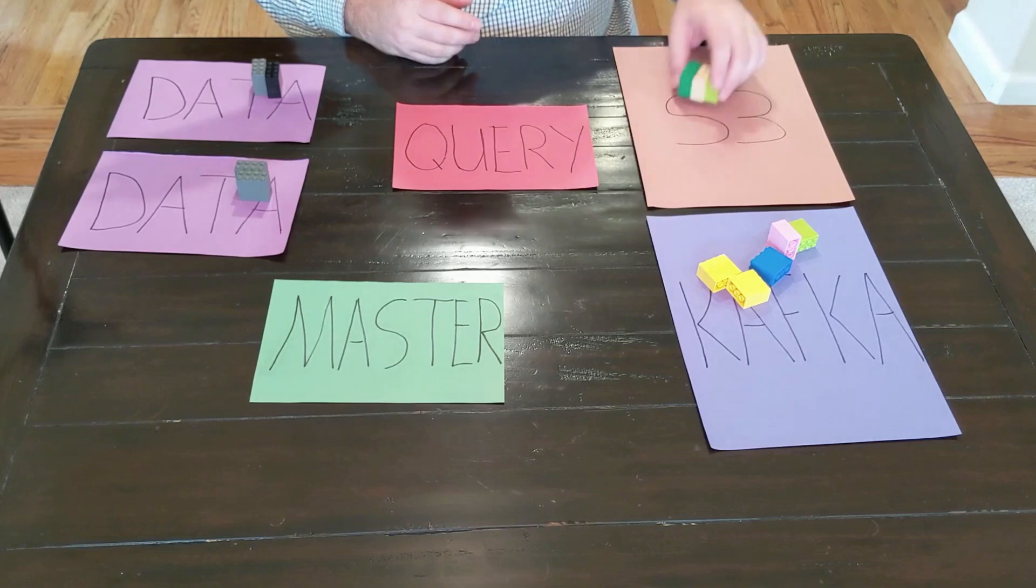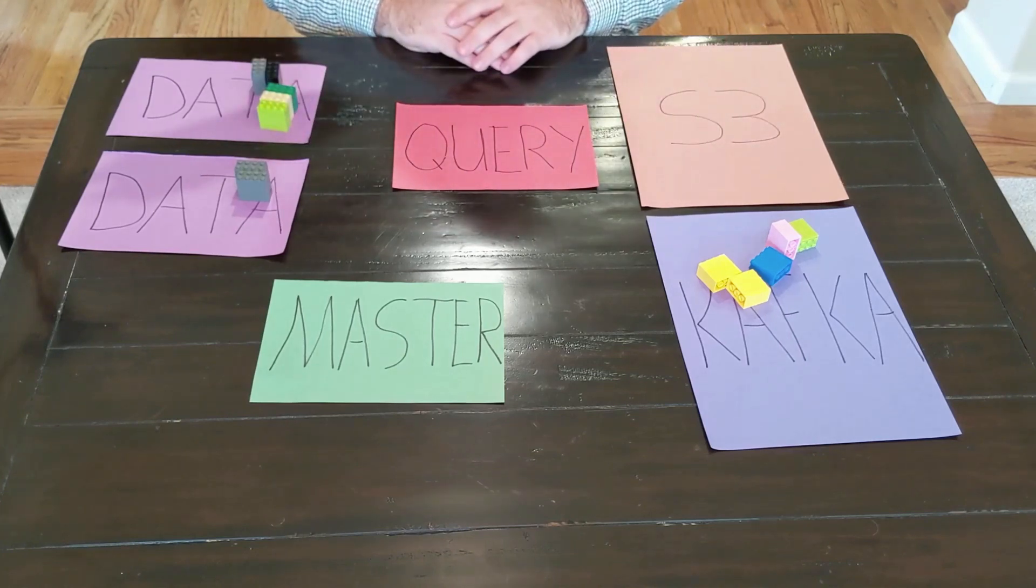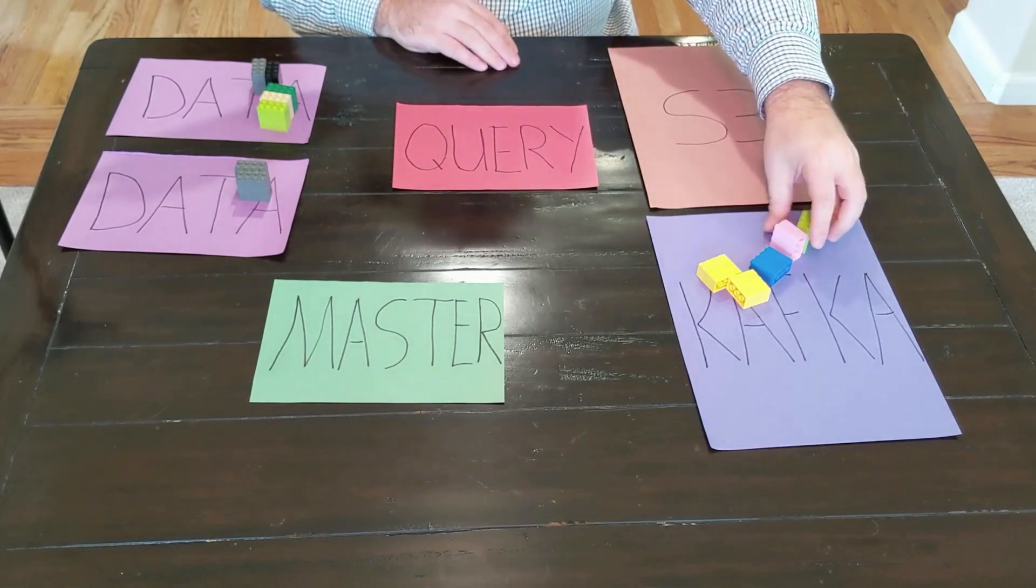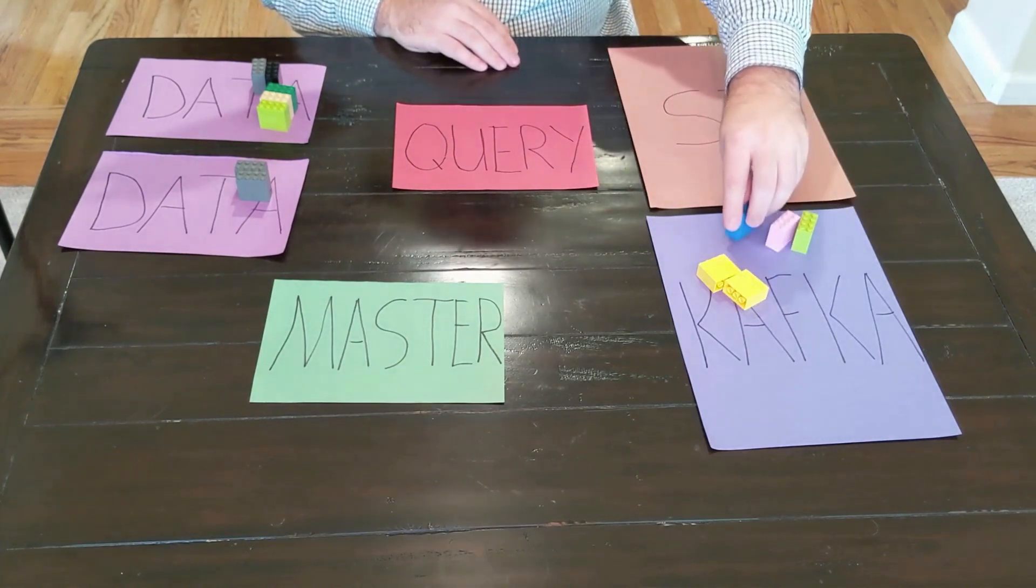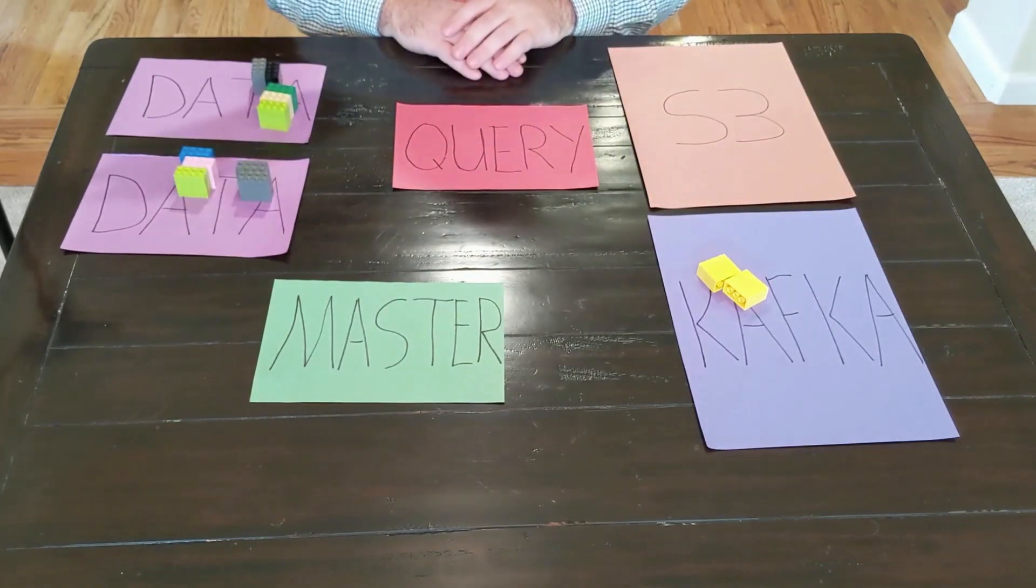From there, that data will then go into one of our data server types. Now, let's ingest a little bit more data. And so we have all this data coming in. We consume it here on our data node.